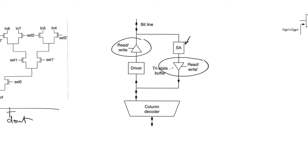There is a tri-state buffer at the output of the sense amplifier and a tri-state buffer at the output of the driver. When writing, we go through the driver and the sense amplifier's tri-state buffer imposes an open circuit. When reading, we go through the sense amplifier and the driver's tri-state buffer imposes an open circuit. This prevents the bit line from being fought over by both, since the driver is a very strong amplifier and the sense amplifier is also a strong amplifier.